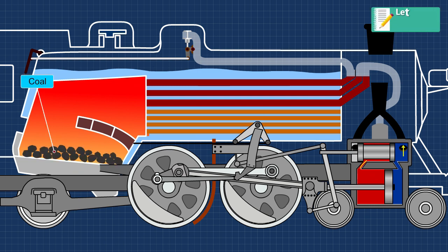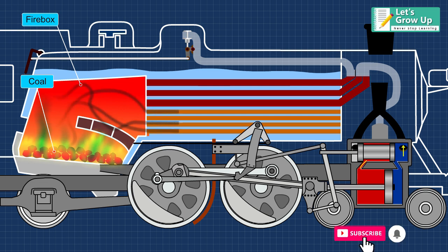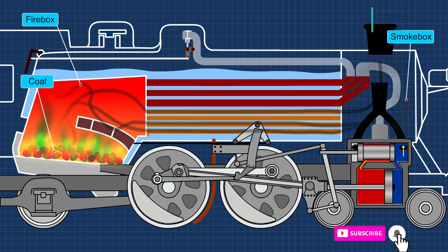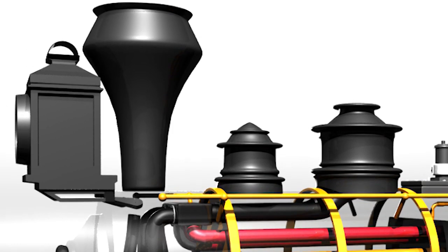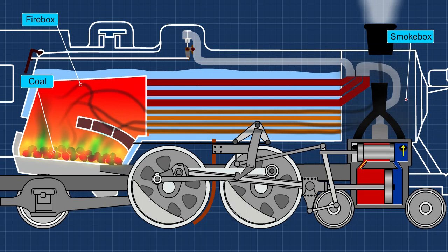First, coal is burnt inside the firebox on a grate. Then hot gases are pushed through long tubes located in the boiler to the smoke box and out through the chimney.